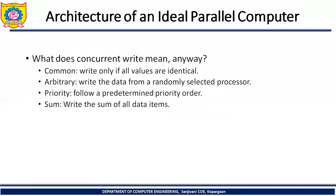Concurrent write means more than two processors can write simultaneously into the memory. They can write by means of four properties: Common — write only if all values are identical; Arbitrary — write the data from a randomly selected processor; Priority — follow a predetermined priority order; and Sum — write the sum of all data items. These four properties allow concurrent writing on a global memory.